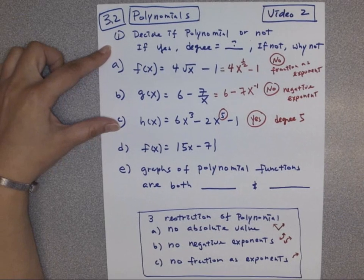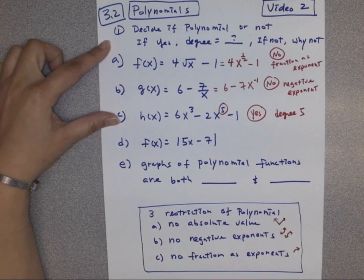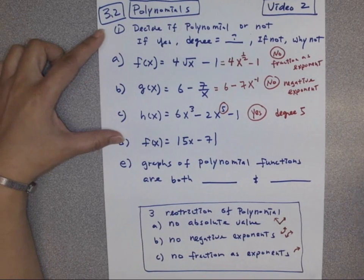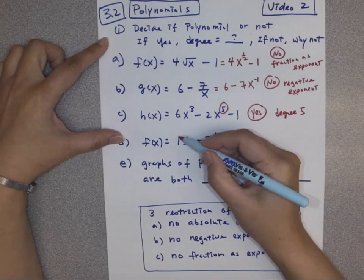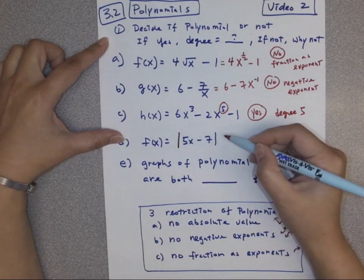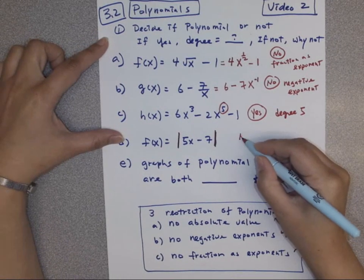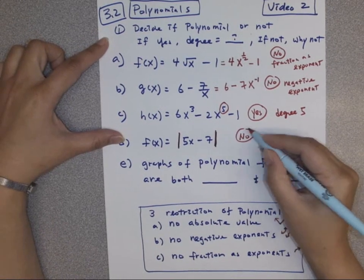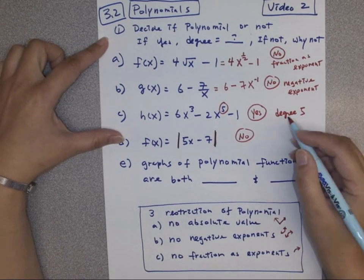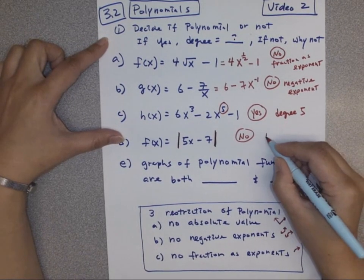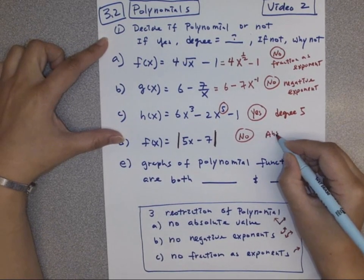The next one has absolute values, so we say no, not a polynomial — because of the absolute value.